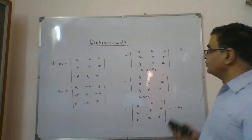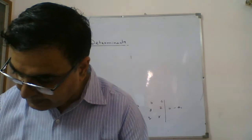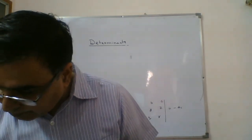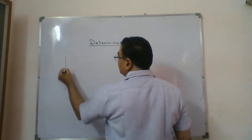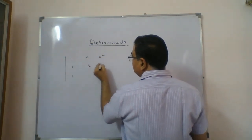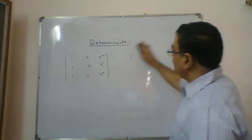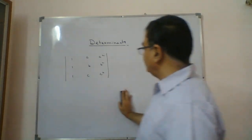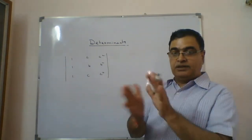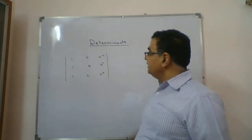Now the next question: evaluate the determinant with rows 1, 1, 1; a, a², b, b²; c, c² — find its value. Until now determinants gave zero due to visible symmetry or common factors making two rows or columns identical. Now we want actual evaluation without expanding.